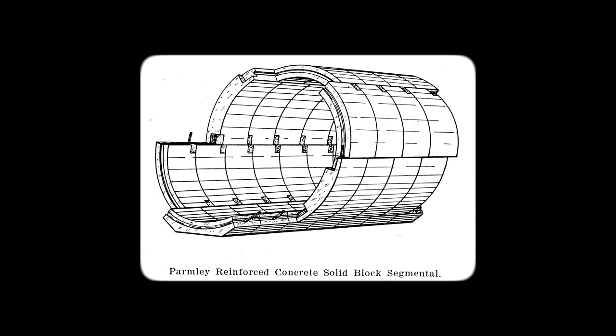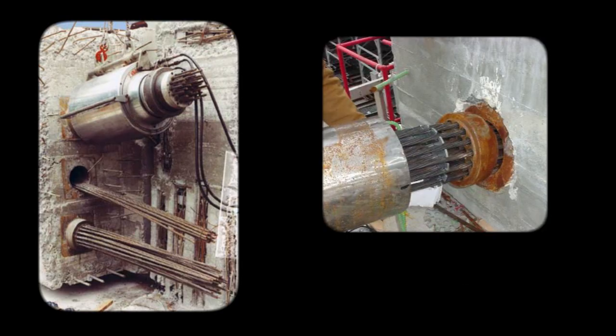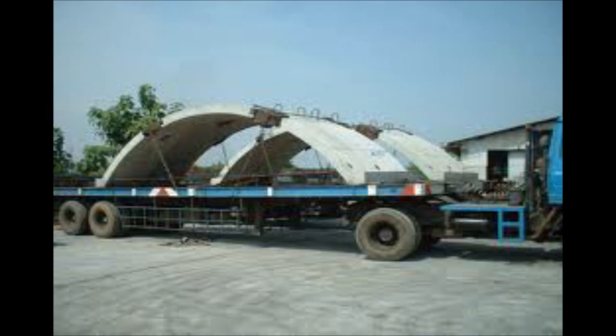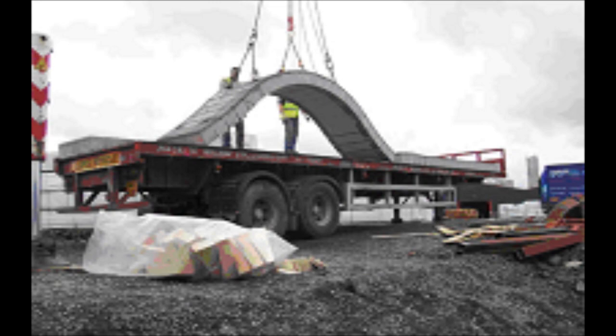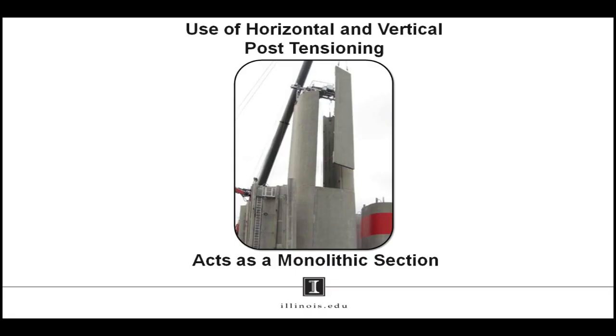The elements that formed one ring were assembled and then post-tensioned horizontally so that they acted as a monolithic section. Several such rings of the tower were then stacked one above the other and made to behave in a monolithic manner by the vertical post-tensioned high-strength tendons to pre-compress the concrete so that it was nearly always in compression under the applied loads.